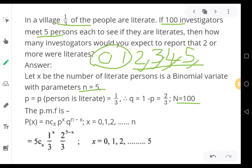Now once again, let us see the values of P and Q in this sum. They are asking about literates. The probability of literates in the village is one third. Therefore, P equals one third. The value of P equals one third, that is 1 by 3. And Q is 1 minus P. That is it will become 2 by 3.